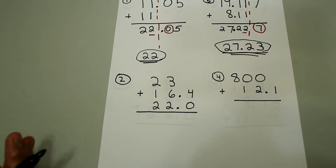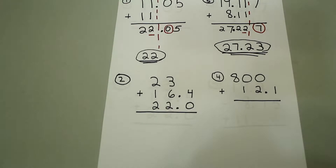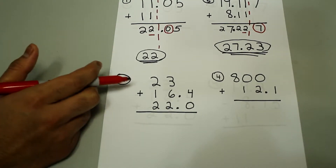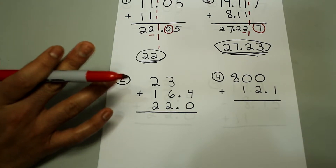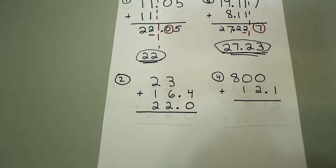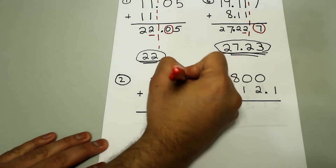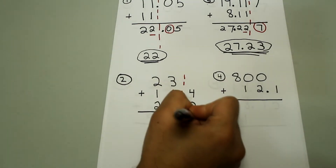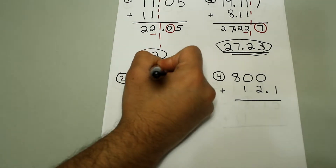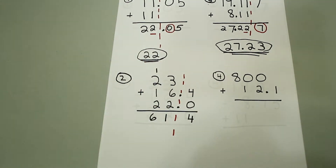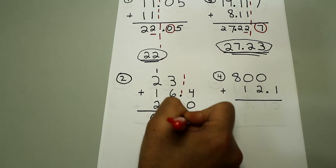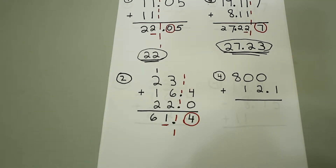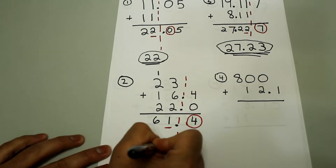If we have more than two numbers that we're adding, we follow the exact same procedure — go with the least number of decimal places. In this case, 23 doesn't have any decimal places, so the final answer will not have any decimal places. We draw a dashed line right after the 3 that goes through everything. Adding straight down, we get 61.4, and we're rounding to the nearest whole number. Since 4 is less than 5, we're rounding down, so the final answer will be 61.